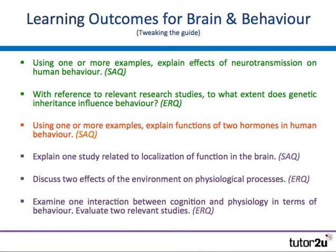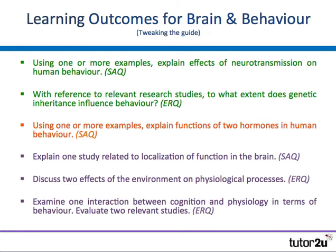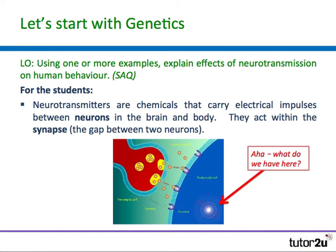I'm going to show you how you can use the neurotransmission information to answer this question as well. We have six colour-coded learning outcomes. The first one we're going to look at is focusing on neurotransmitters and behaviour — and perhaps surprisingly, we're actually going to start with genetics. The learning outcome is: using one or more examples, explain the effects of neurotransmission on human behaviour.